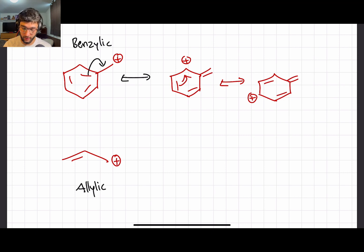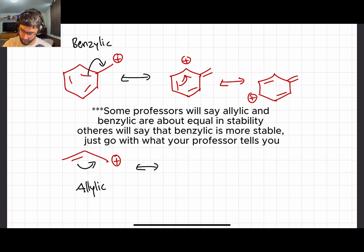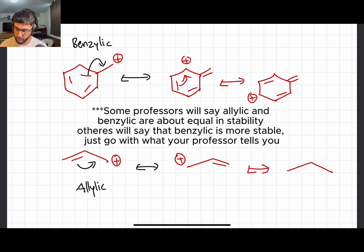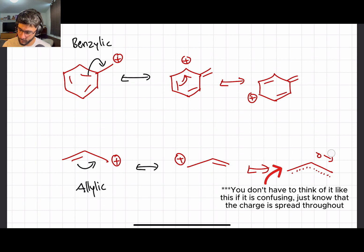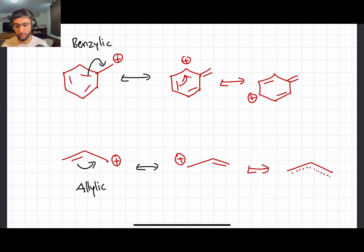Similarly, the allylic structure can spread the charge across the molecule the same way. The positive charge ends up on the opposite end, so now it's distributed across the entire molecule. That's why these structures are so stable.